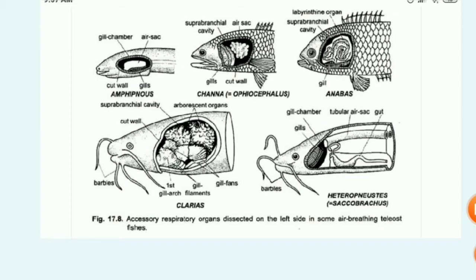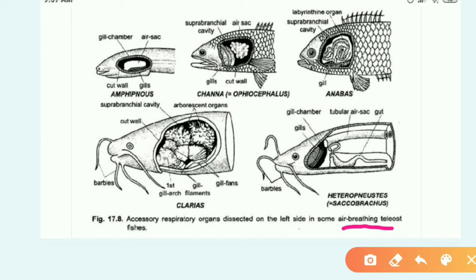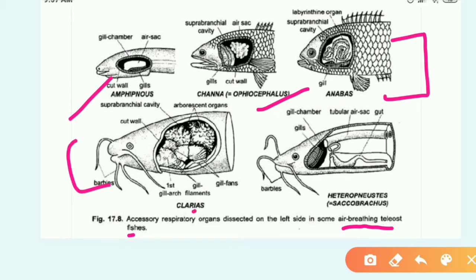Looking at a diagram of air-breathing fishes — focusing on teleost fishes — some important examples are: Amphipnous (1st), Channa (also called Ophiocephalus), Clarias, and Heteropneustis (also called sac-breathers). The last three are particularly important for our practical study.